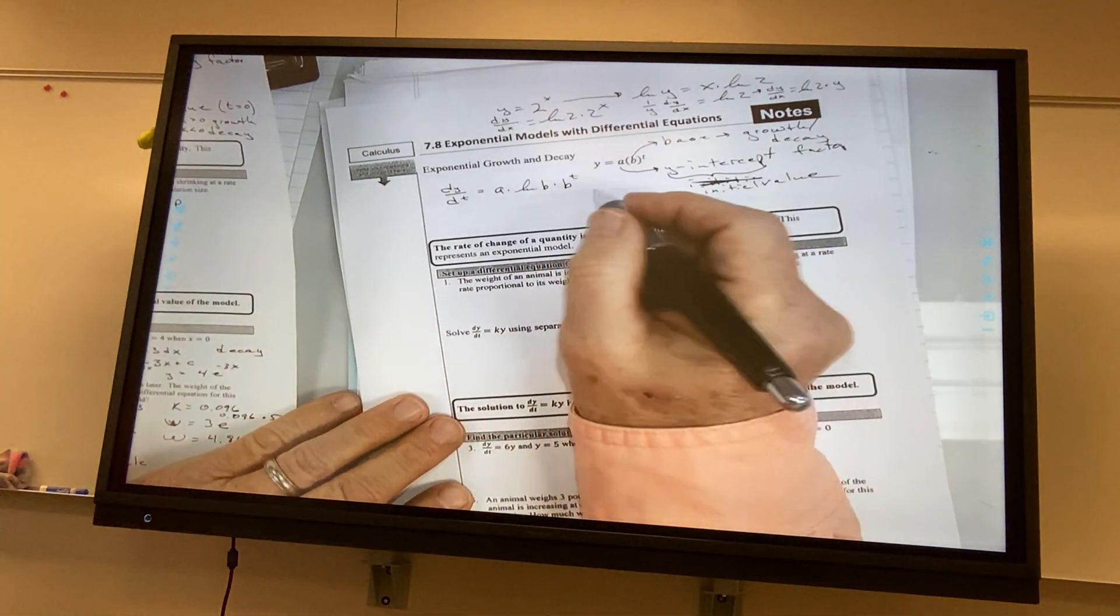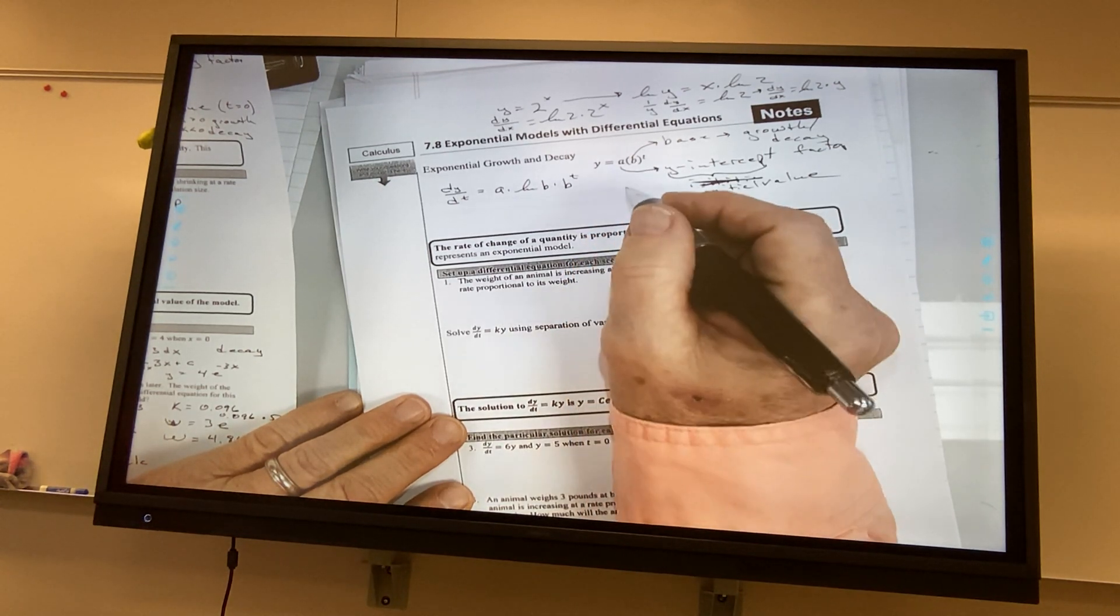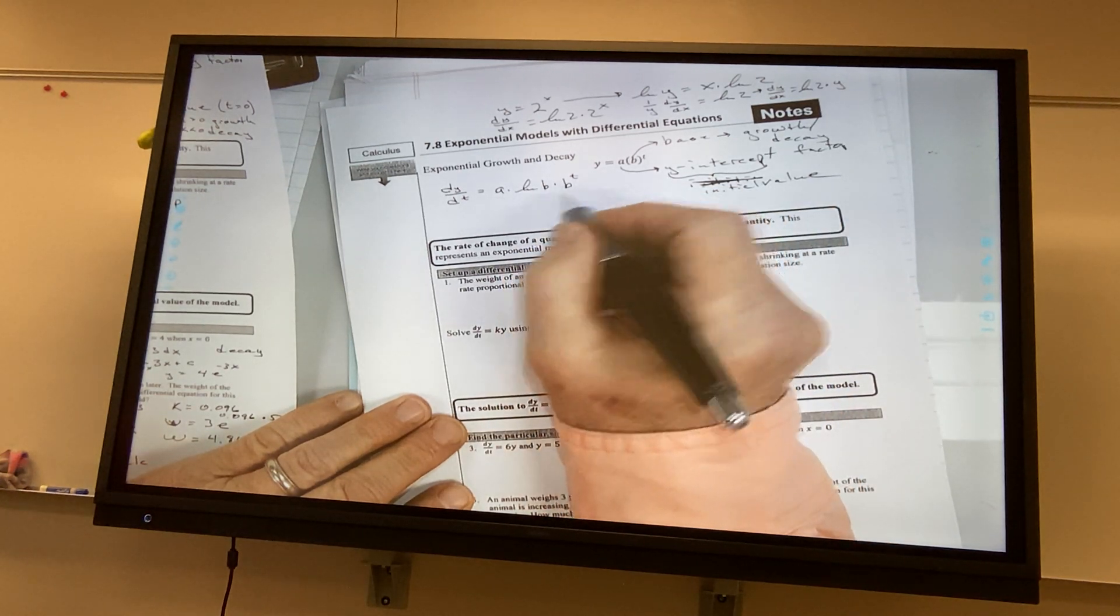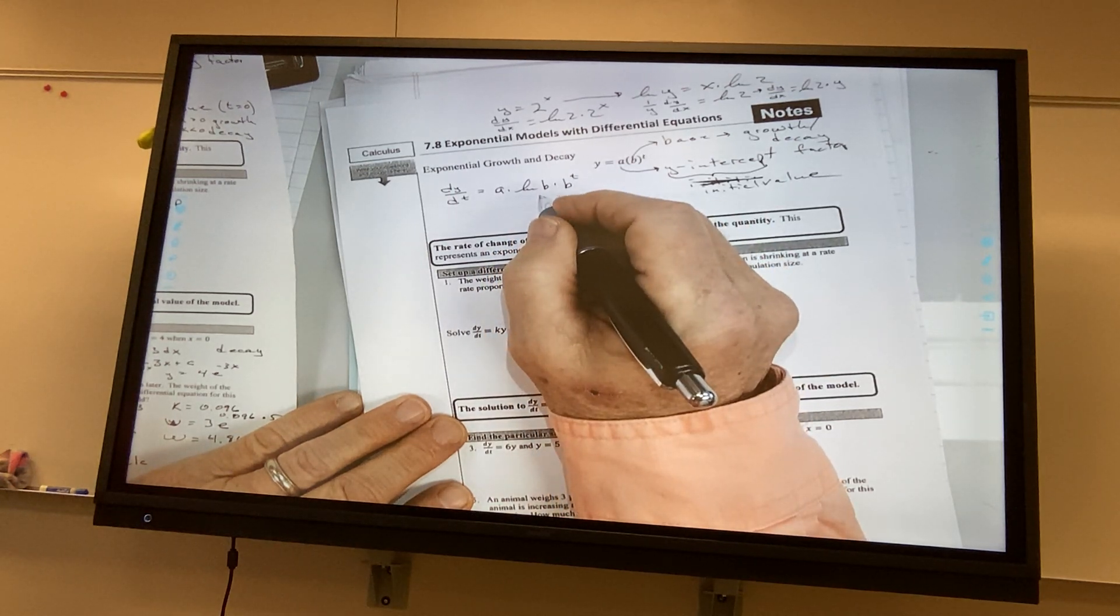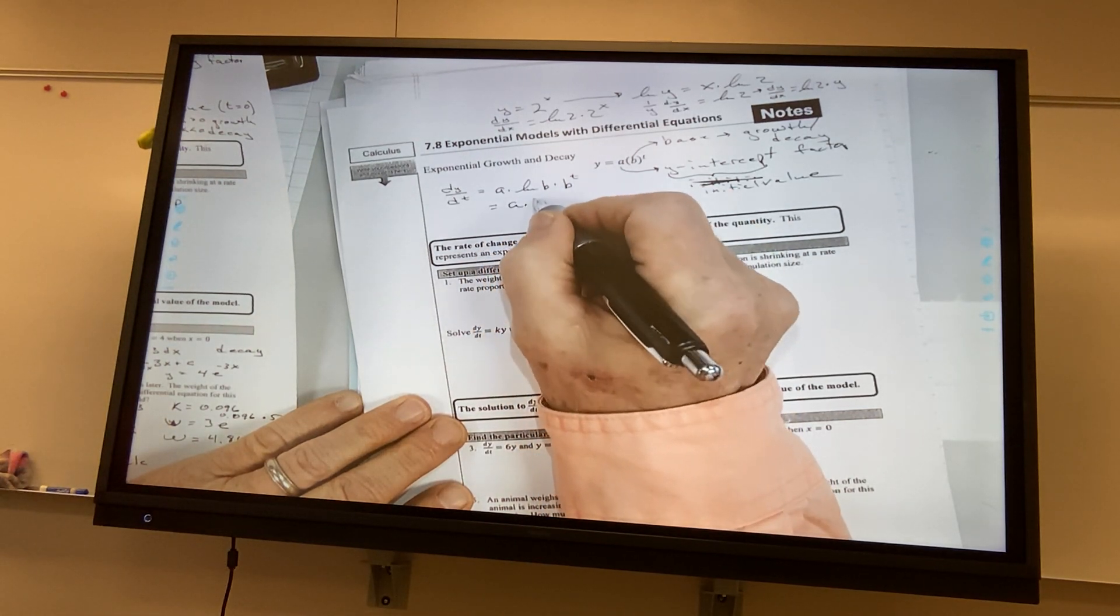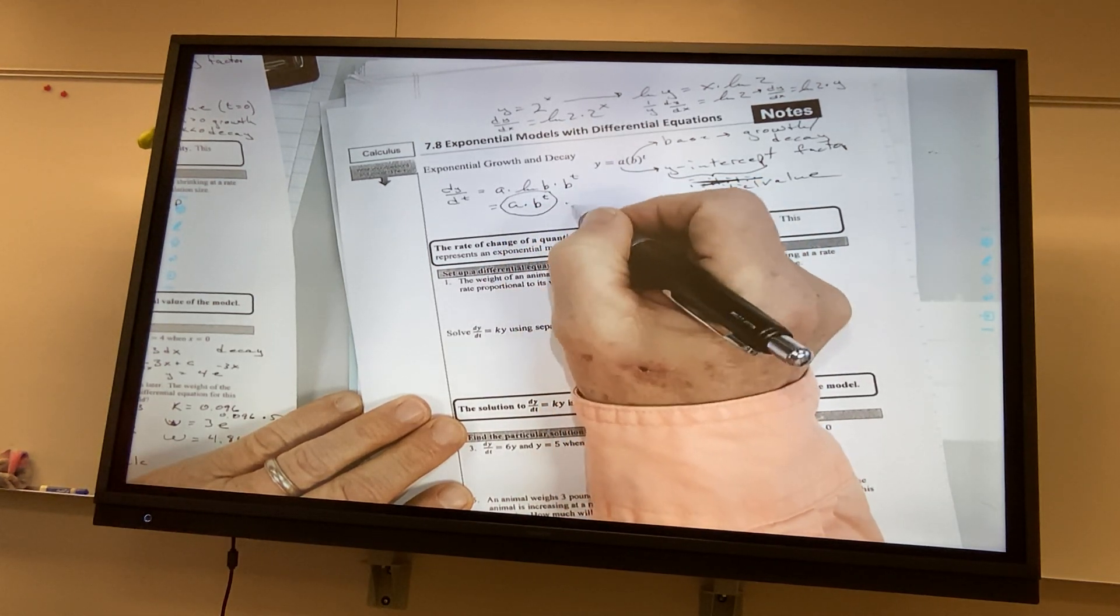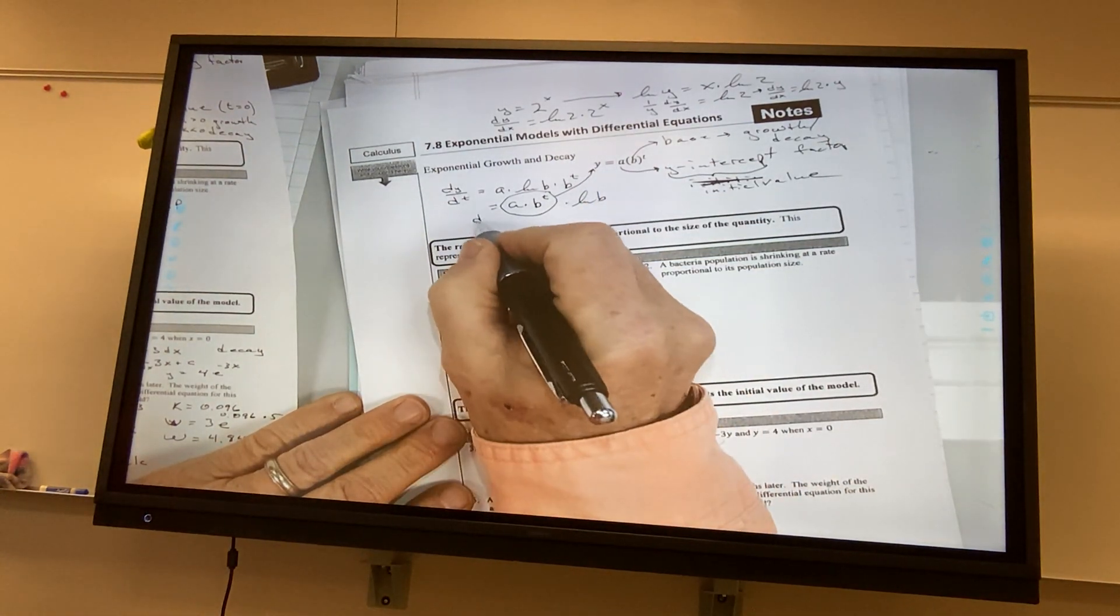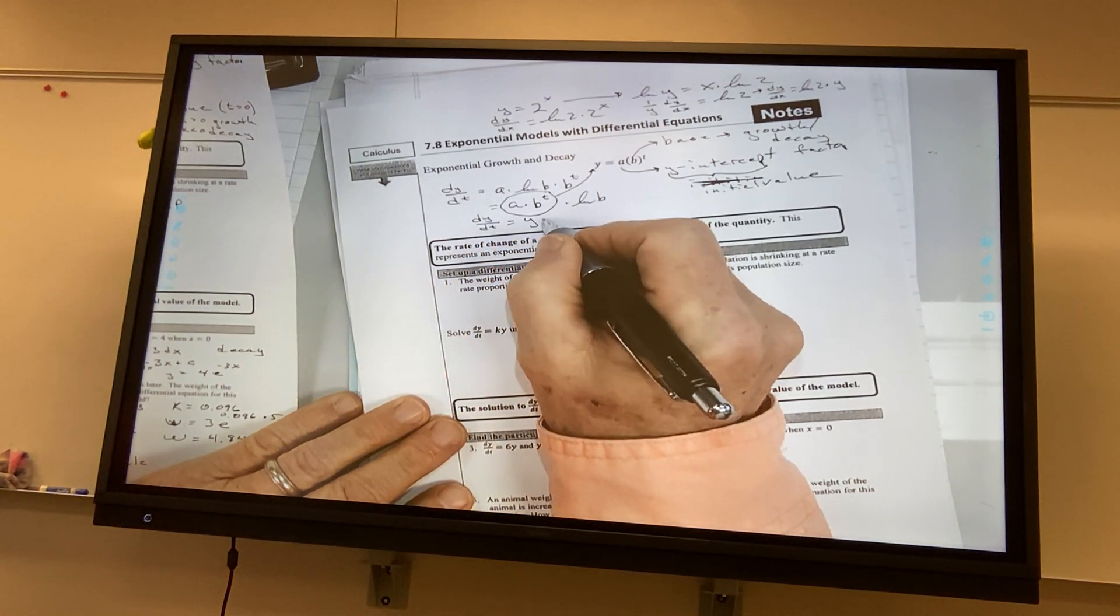So, then what I can do is, I said, this thing right here, this product, notice that I can rewrite it like this, I'm just looking at it like this, this right here, is y, isn't it? So, I can say dy dt is equal to y times the natural log of b.